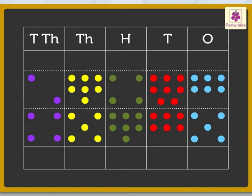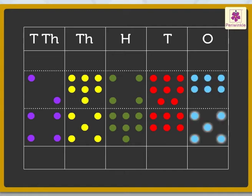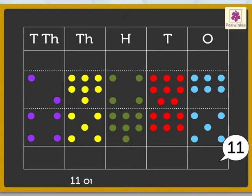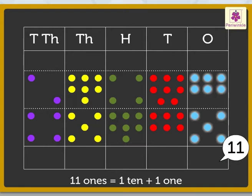Six blue dots plus five blue dots is equal to eleven ones. As we know that eleven ones is equal to one ten and one one, so we regroup eleven ones as one red dot and one blue dot. We get one one.